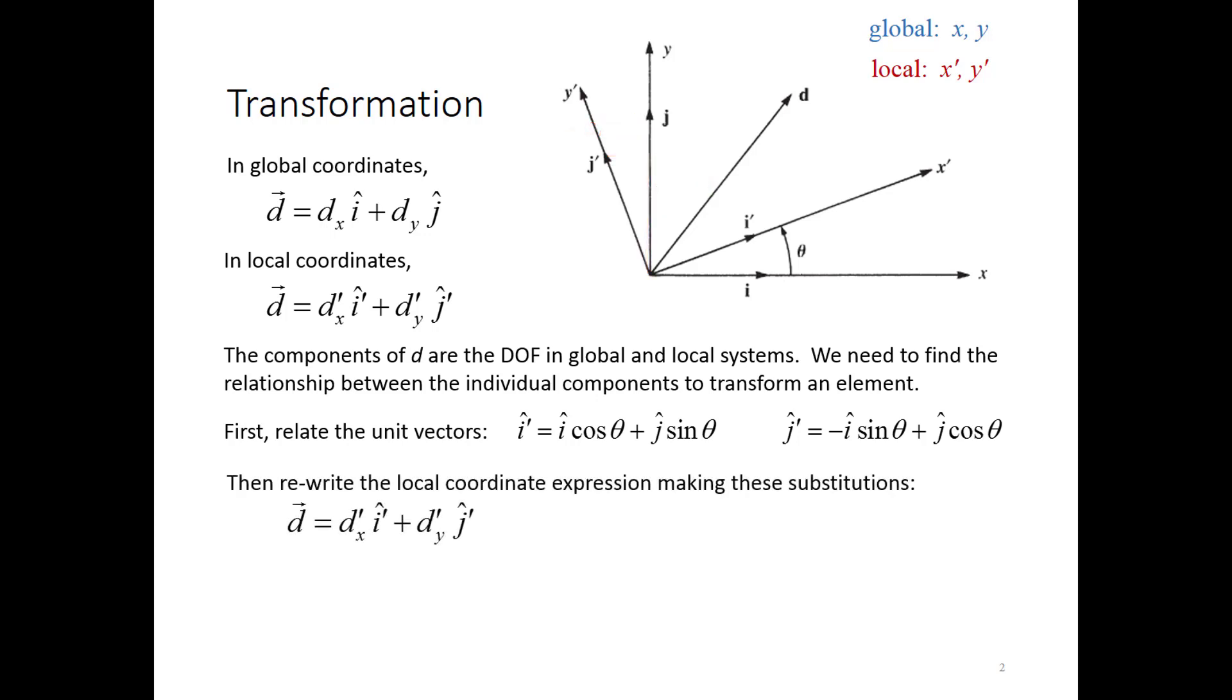So now that we have that relationship, we can go back to the local coordinate expression for D and then expand out those unit vector terms. As you see here, I've now written D in local coordinates but using the expanded definition of the i-hat prime and the j-hat prime so that now the unit vectors are the global coordinate unit vectors. If I rearrange terms then, this tells me that the vector D can be written as i-hat times dx prime cosine theta minus dy prime sine theta. But if we look up at the top, that's what we're calling dx. Similarly, the j-hat term for D is dx prime sine theta plus dy prime cosine theta, or that's just dy.